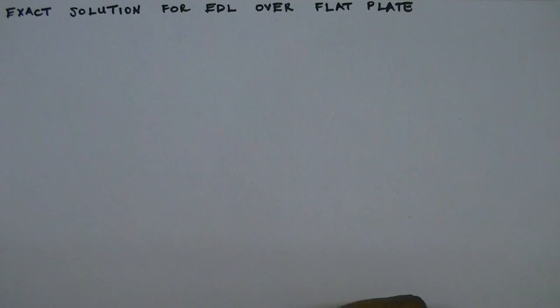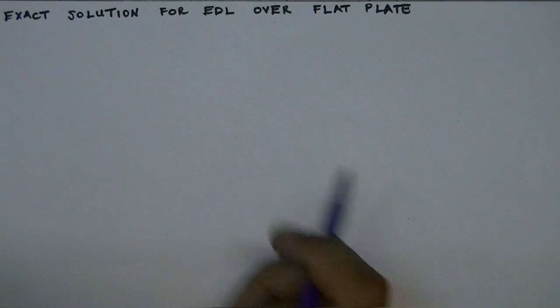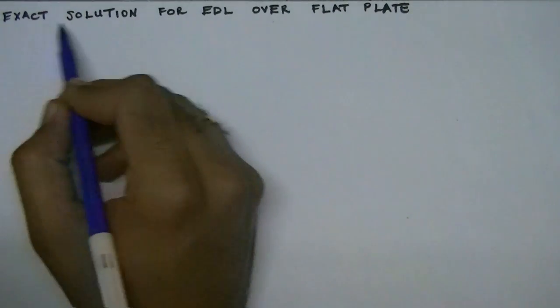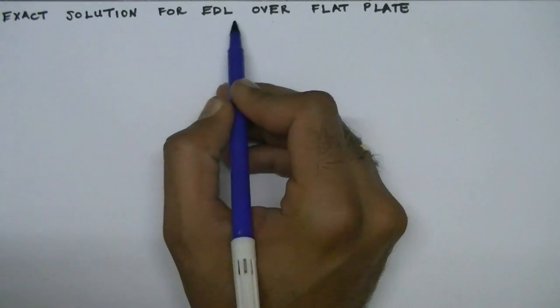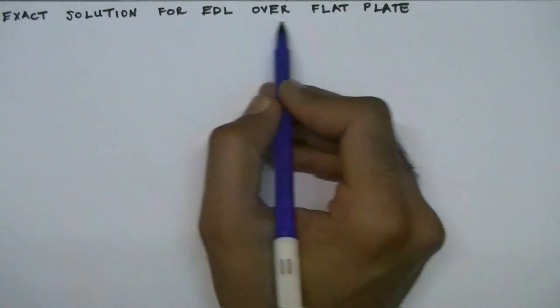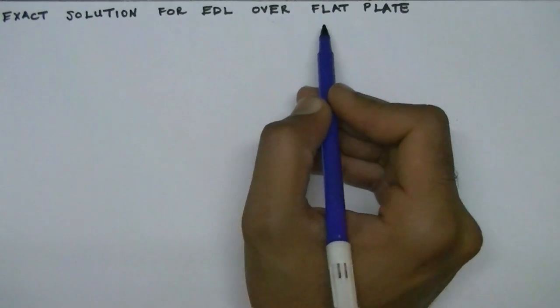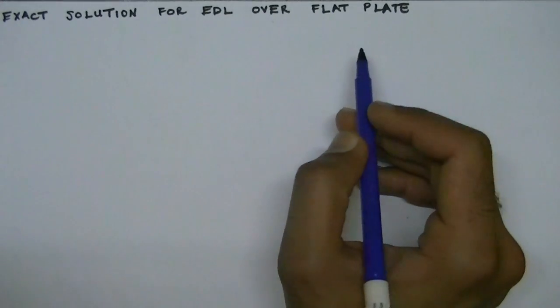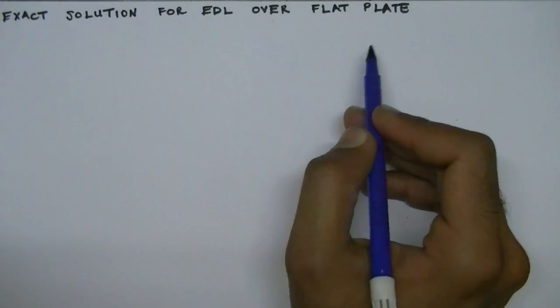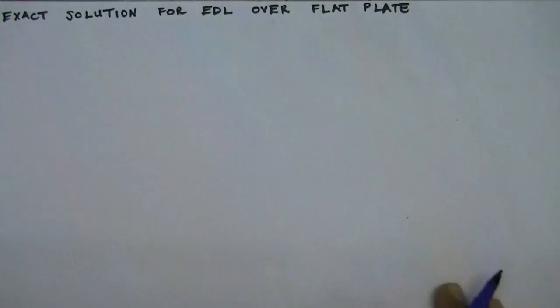In this lecture we will derive the exact solution for the electrical double layer over a flat plate in an infinite electrolyte media.